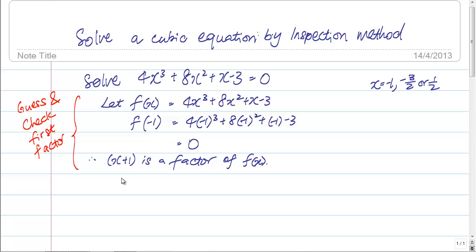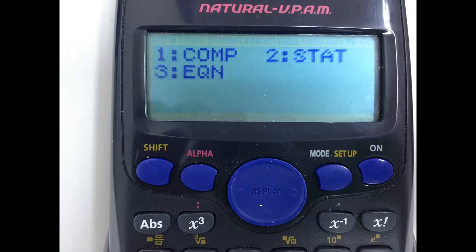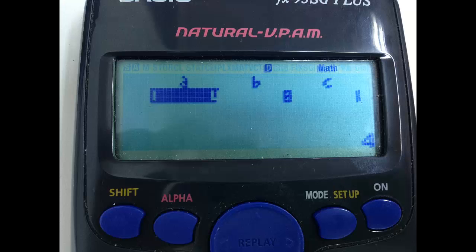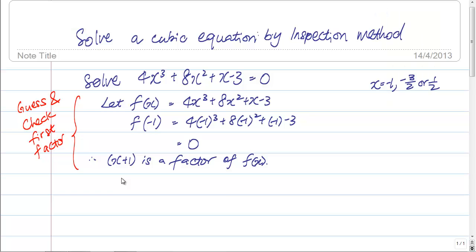Whether you choose to do it by inspection method or you choose to do it by synthetic division, the first step will be the same for both, which is to guess and check your first factor. And in my previous video, I showed you that I actually use my calculator to help me with the guess and check. So now, in order to carry on this question, I'm going to make use of inspection method.